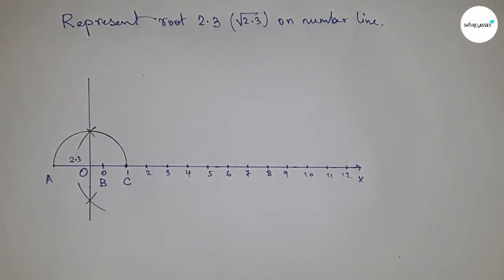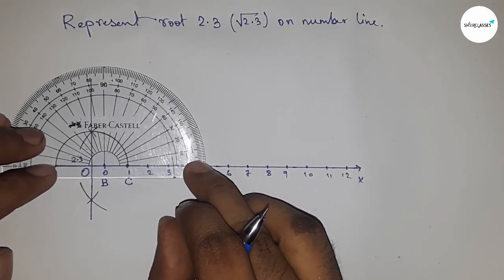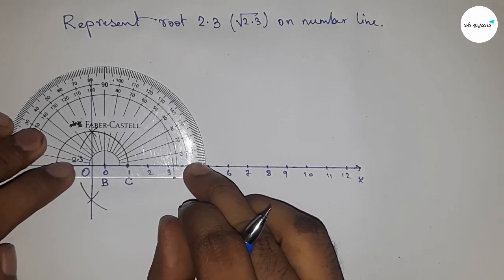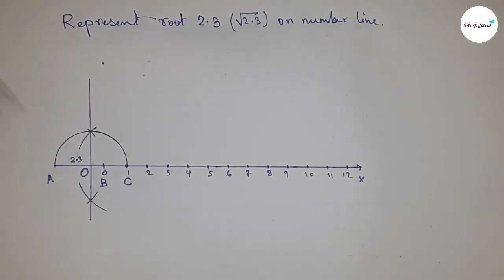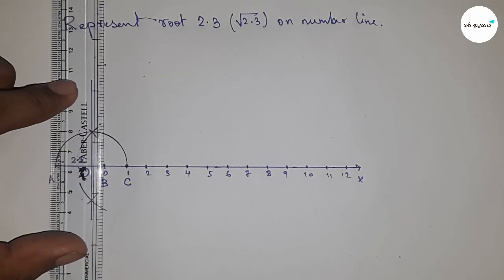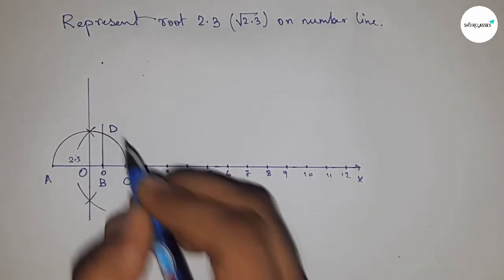Construct a 90-degree angle at point B using a protractor. Draw this perpendicular line, which meets the semicircle at point D.